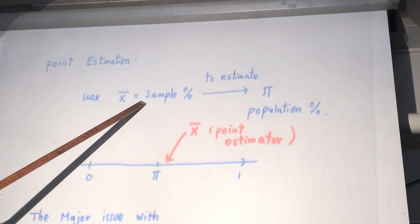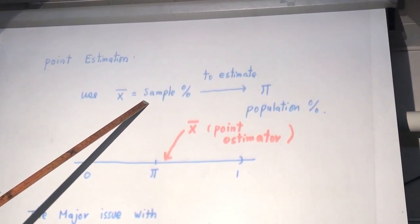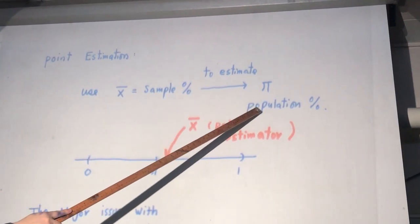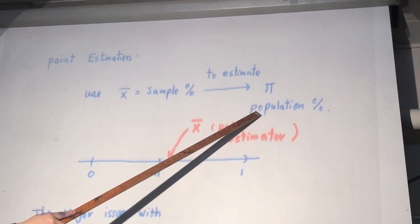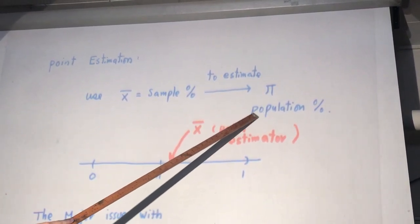So x1 plus xn is called count divided by n is called sample percentage. And we use sample percentage to estimate pi. Pi is population percentage. Always say this is average of a count box. Pi is average of a count box.